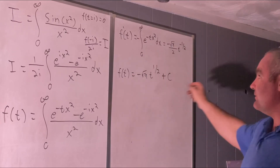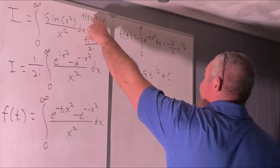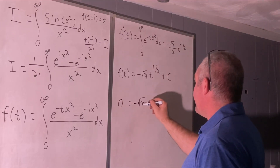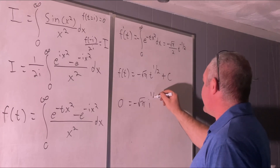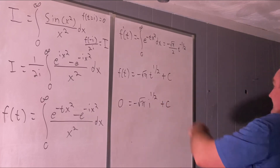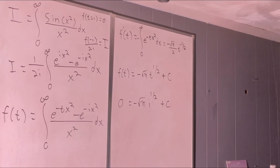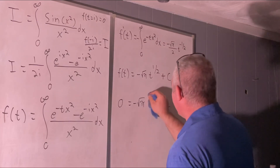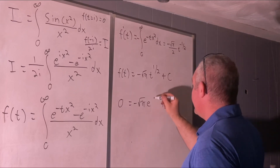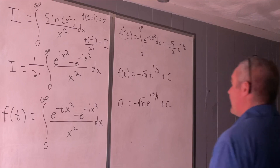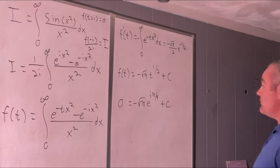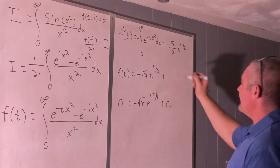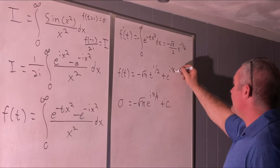To get rid of c, we use the fact that f evaluated at t equals i gives 0. That means 0 equals negative square root of pi times i to the one half plus c. Now i to the one half: i can be written as e to the i pi over 2, so raising that to the one half power gives e to the i pi over 4. Therefore c equals positive square root of pi times e to the i pi over 4.